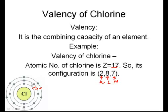And in the outermost shell, which is the M shell, the number of electrons that can be accommodated are 8. But in this particular example, in the chlorine atom, we have only 7 electrons present. So only 7 electrons are accommodated in M shell.